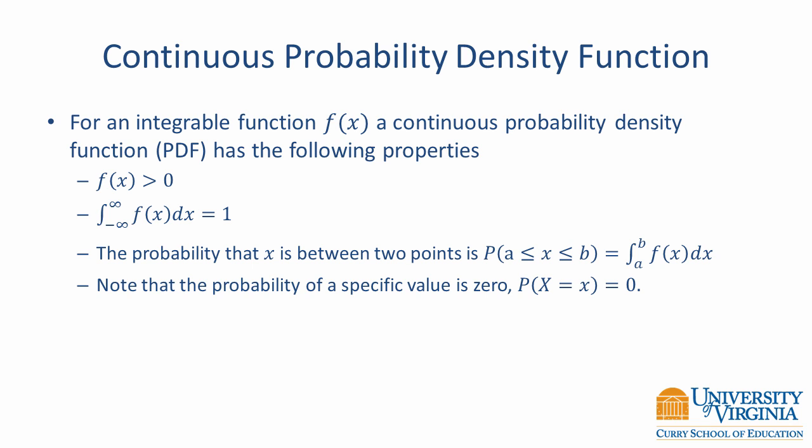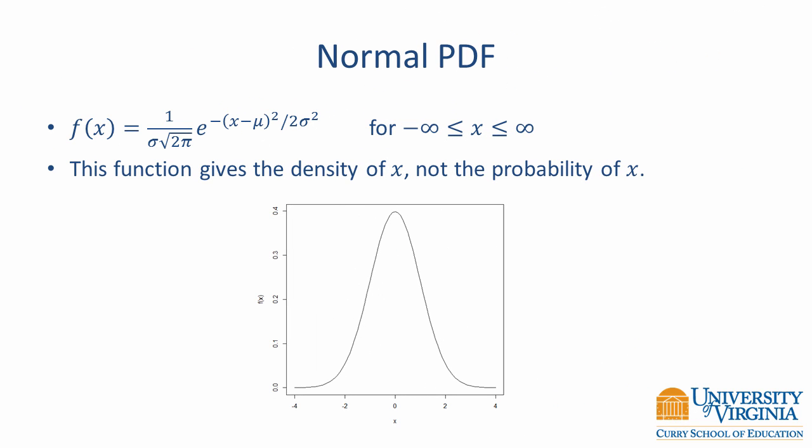A continuous random variable has a density function that is defined in a similar way as a probability mass function, but there is an important distinction: the continuous nature requires the use of an integral instead of a summation. An integral is like a continuous sum — it gives the area under a curve between two distinct points. A continuous probability density function, or PDF, does not give the probability of an exact value. Rather, it gives the probability that a value lies in an interval that ranges from a to b. It requires that each density value f(x) be greater than 0, and that the total area under the curve equals 1. We can use the PDF to compute the density of a value, but not the probability itself.